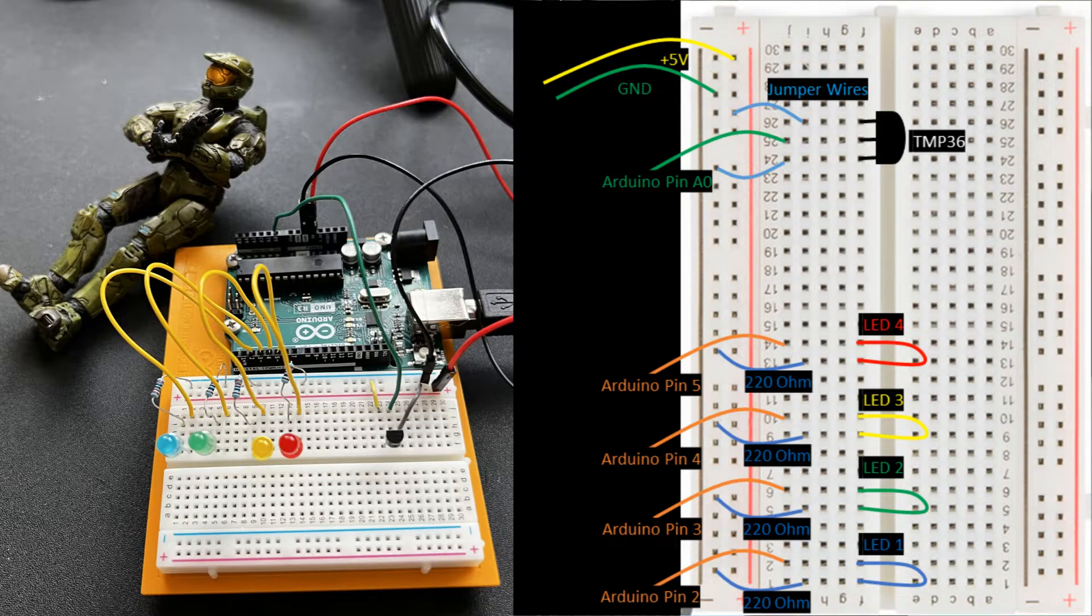Then connect your power rail to the 5-volt and ground pins of the Arduino. So this is actually it for the physical build. We have a series of four LEDs here that we will turn on in order as the temperature sensor reads progressively hotter. Now let's take a look at what our Arduino program, or sketch, is going to look like.